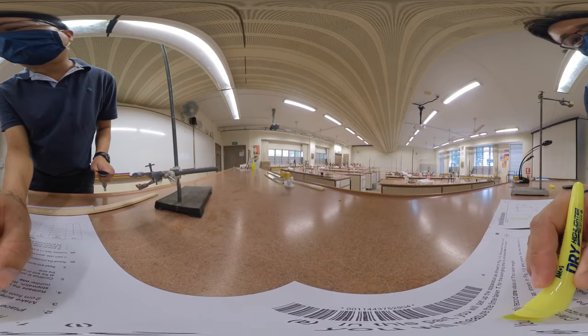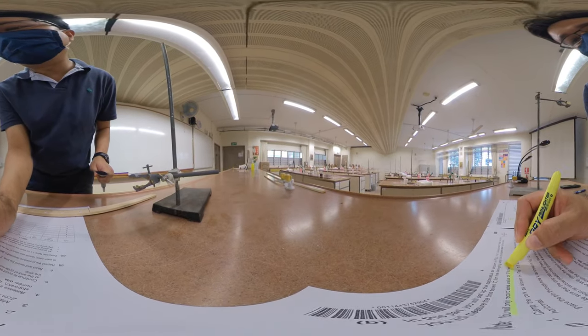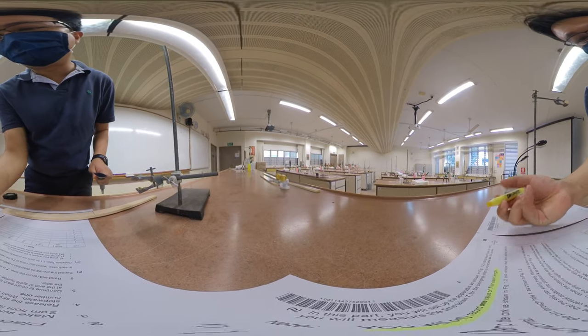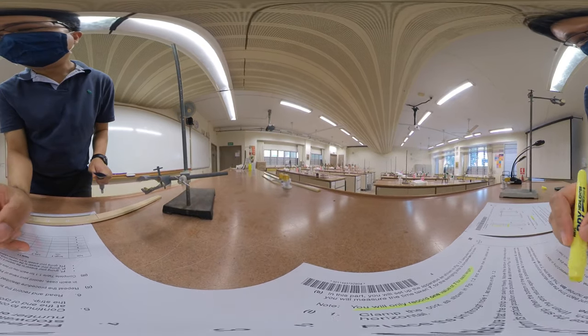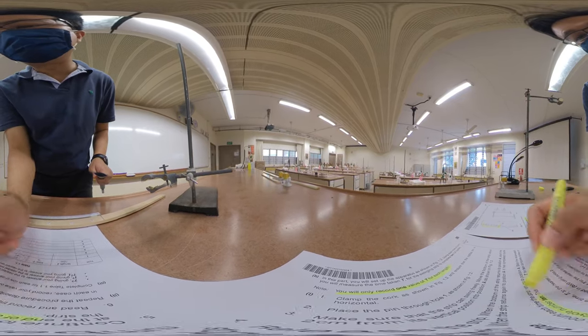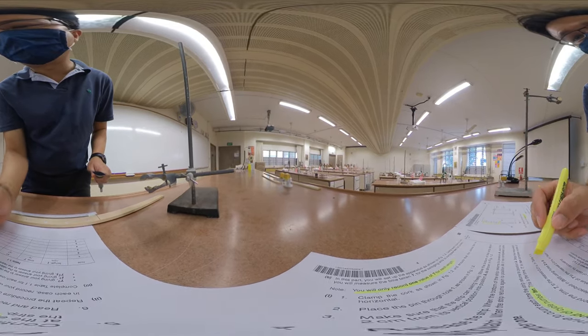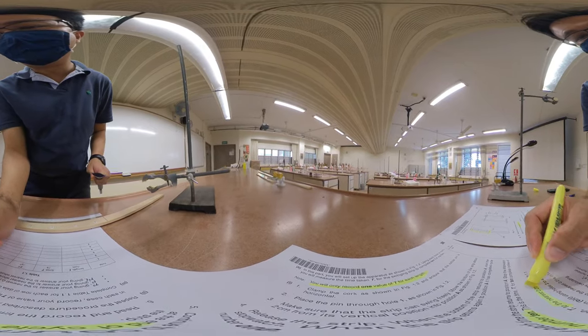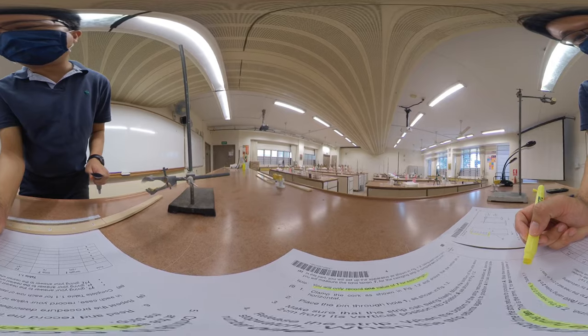We will only be recording one value of T for each length. And what is T? T is the time taken to complete 10 cycles, and we're going to record T to the nearest 0.01 seconds.